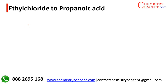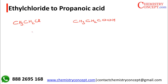Ethyl chloride to propanoic acid: CH₃CH₂Cl to CH₃CH₂COOH. Obviously, chlorine cannot be replaced by COOH directly. Plus, it's a step-up reaction — that means in the reactant we have only two carbons, but in the product we have three carbons.